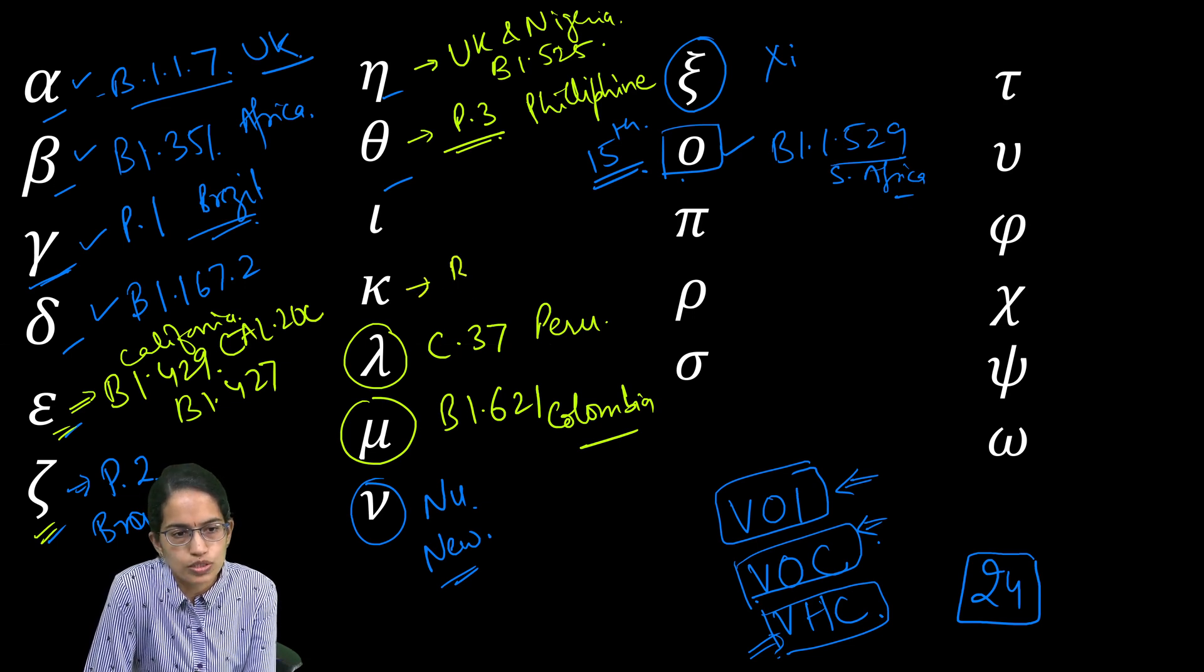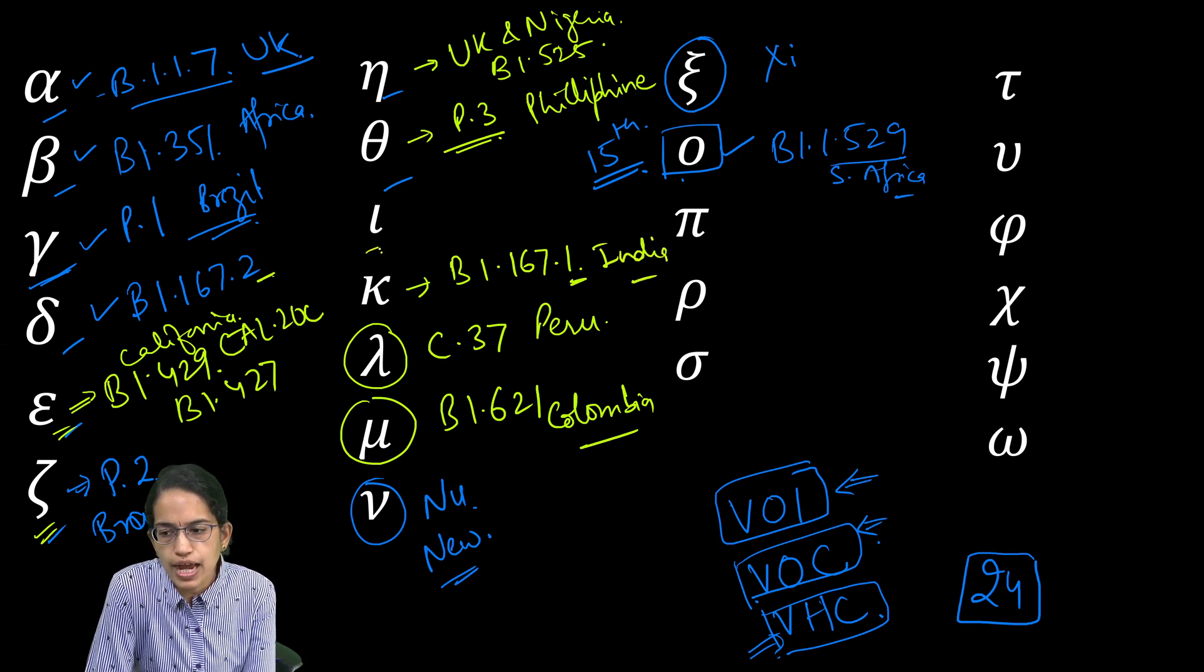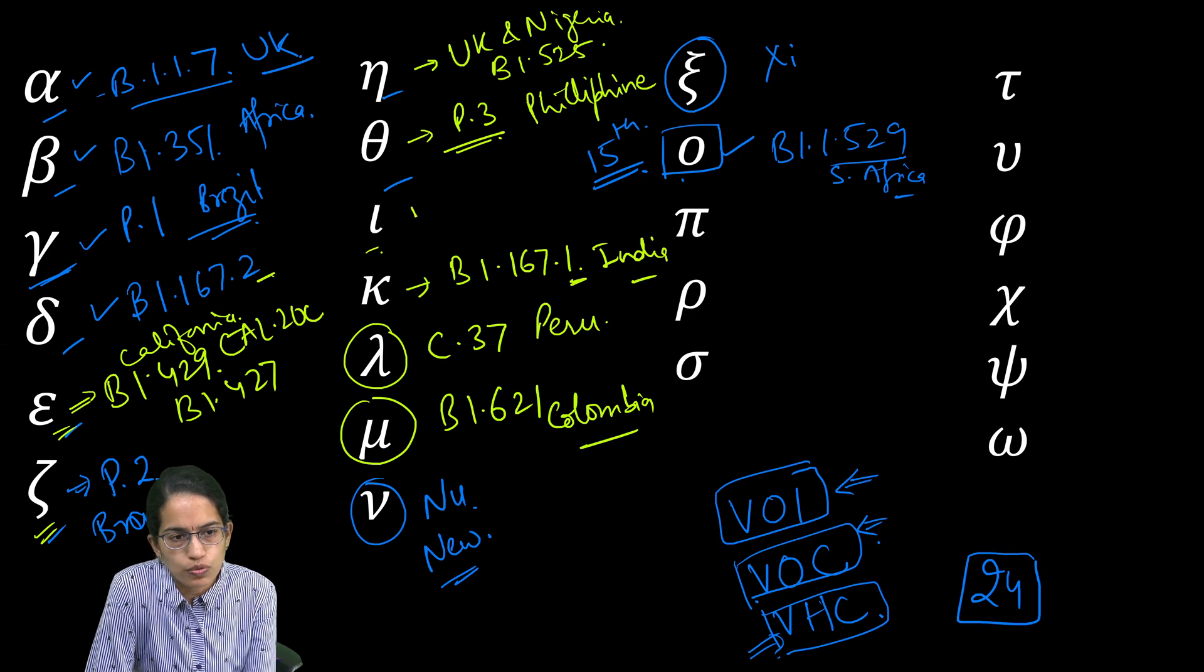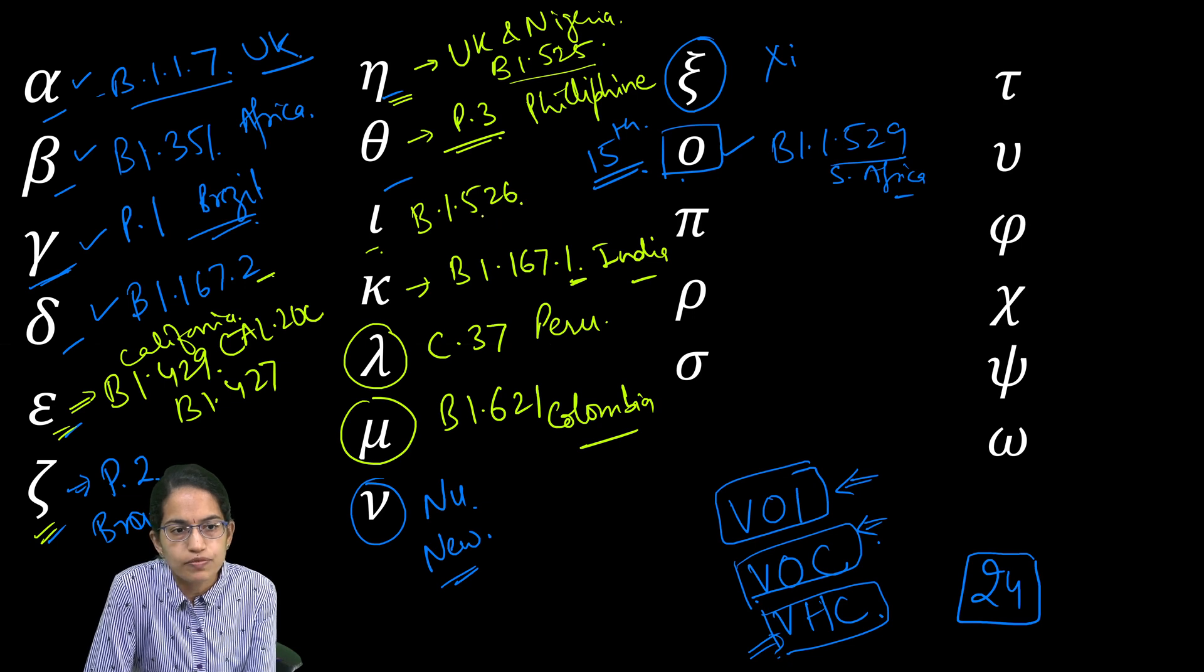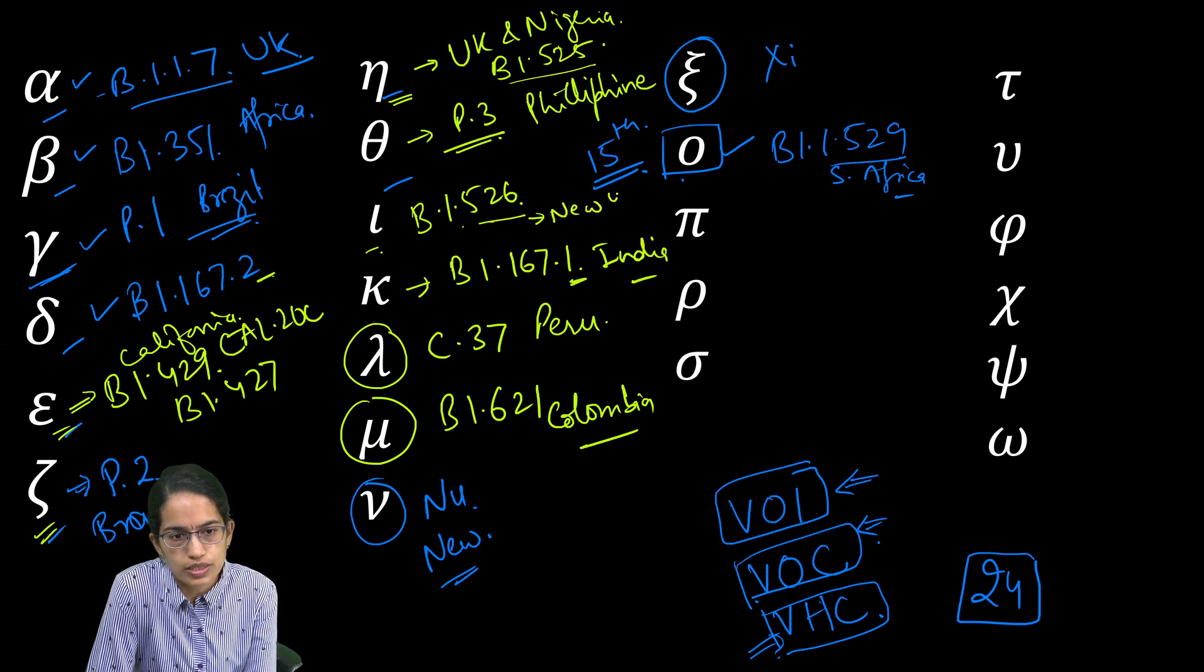The next is the iota and the kappa variations. Kappa lineage was B1.617.1, similar to the delta just the last variation was there and this was the first reported cases in India. Then we had the iota lineage which was B1.526, after the eta which was B1.525 this was B1.526 and this was seen from New York US.